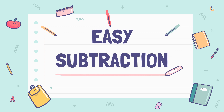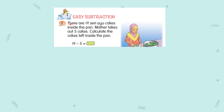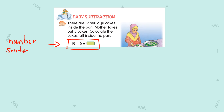Good morning class. Today we will learn easy subtraction. Question number one: there are 19 cats inside the pen. Mother took out five cats. Calculate the cats left inside the pen. Now, 19 minus 5 equals what? This is a number sentence.